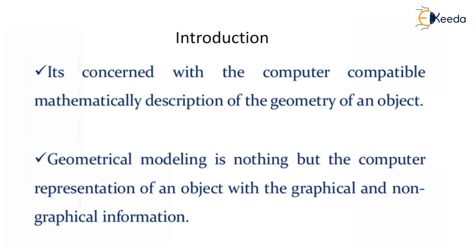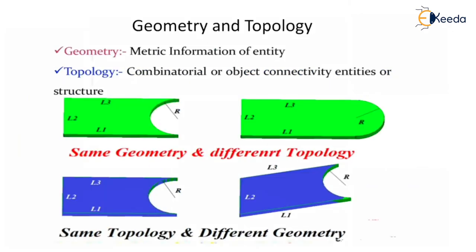Geometric modeling is concerned with the computer-compatible mathematical description of the geometry of an object. It is the computer representation of an object with graphical and non-graphical information. Remember, there will be both graphical and non-graphical information — geometry and topology — and it is a very important concept you must understand.